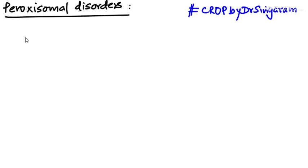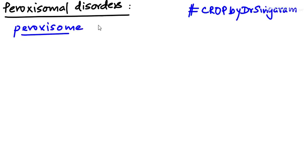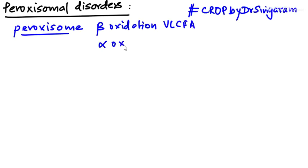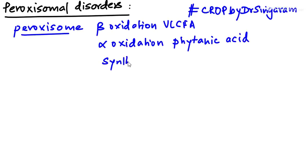Welcome to the discussion on peroxisomal disorders, a topic very frequently asked in competitive exams. A peroxisome is a cell organelle involved in certain unique functions like beta oxidation of very long chain fatty acids, alpha oxidation of a special substance called phytanic acid, and synthesis of a phospholipid called plasmalogen.